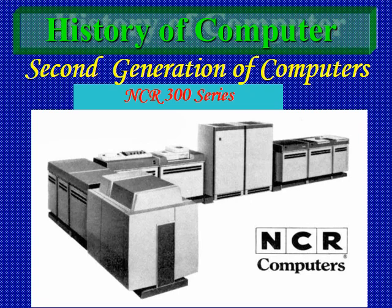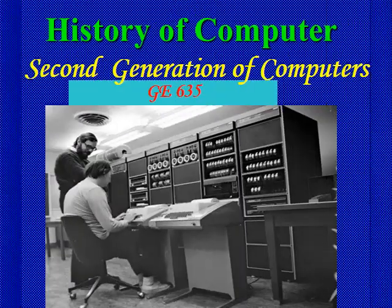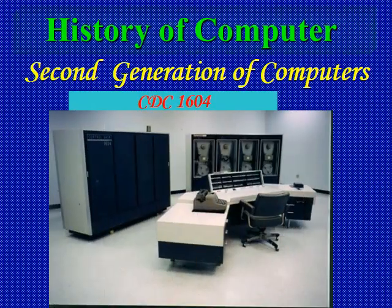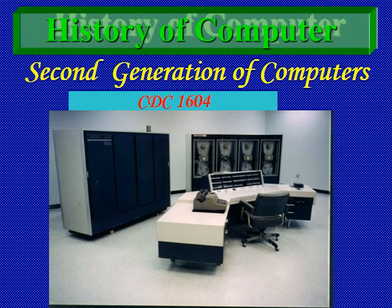NCR — National Cash Register — 300 series was also developed in the second generation. GE General Electric 635 computer and CDC — Control Data Corporation — 1604 computer were also developed in this generation. They are very big in size, just like cupboards.